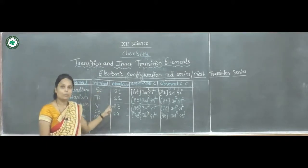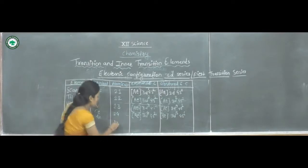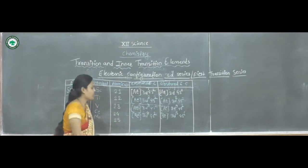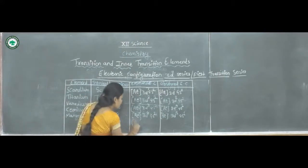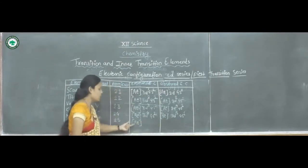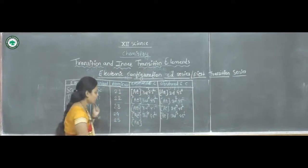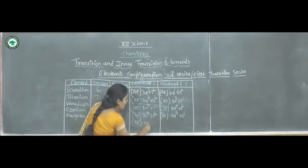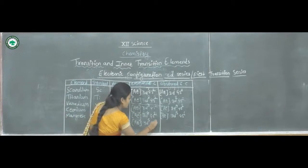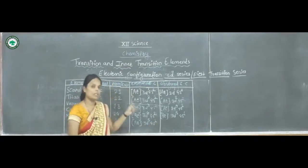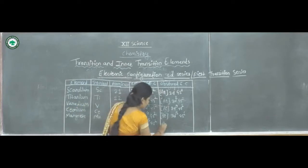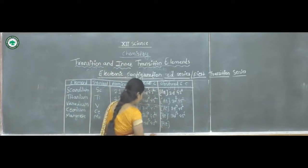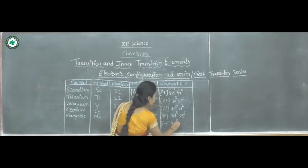The next element is Manganese, symbol Mn, atomic number 25. The expected electronic configuration is [Ar] 3d⁵ 4s². The observed electronic configuration is the same: [Ar] 3d⁵ 4s².